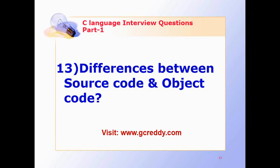Differences between source code and object code. Source code. Source code is in the form of a text and is human readable. Source code is generated by the human and its input given to the compiler.